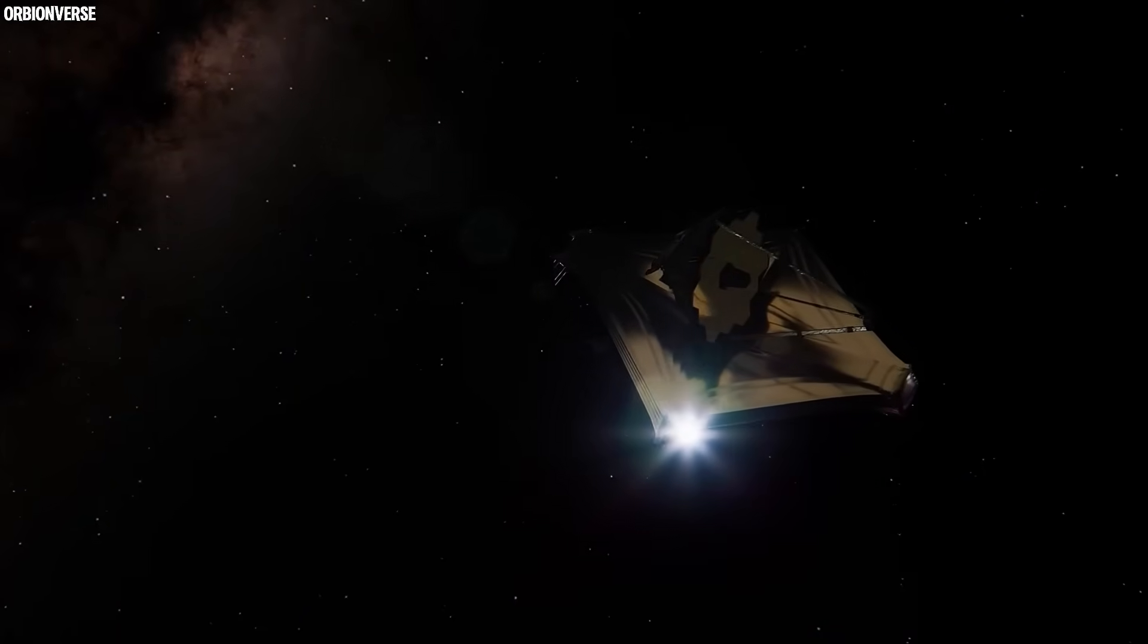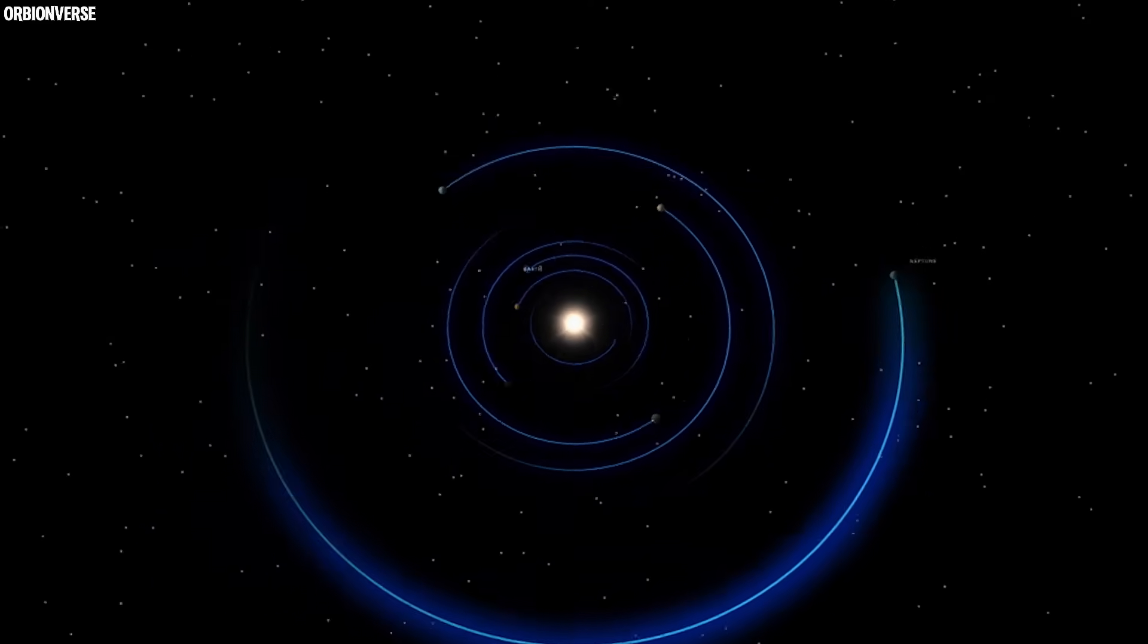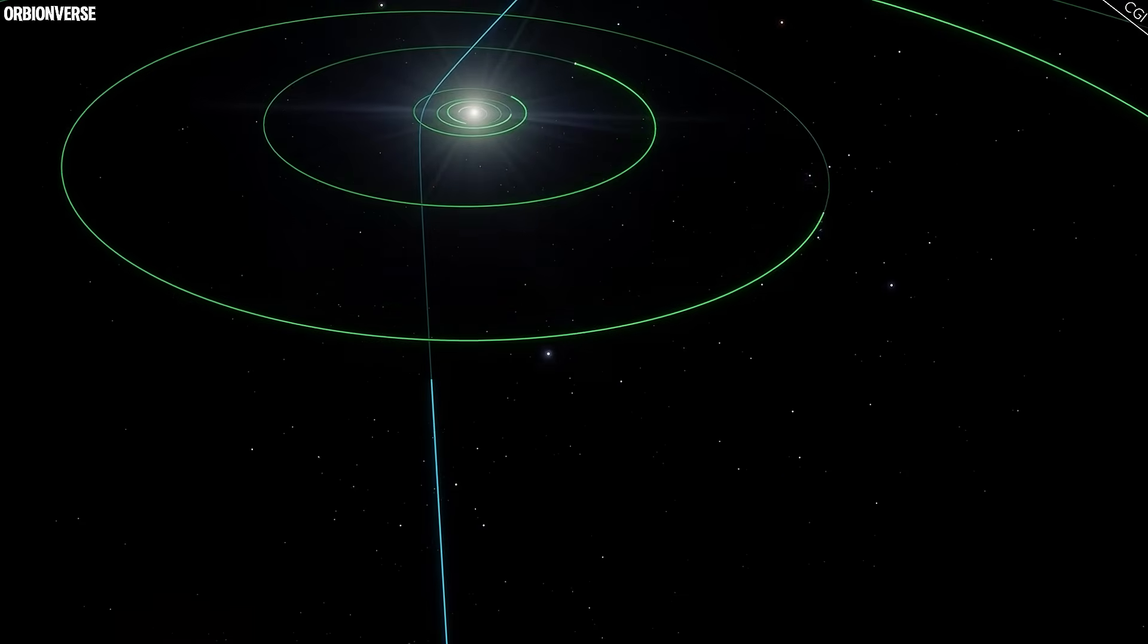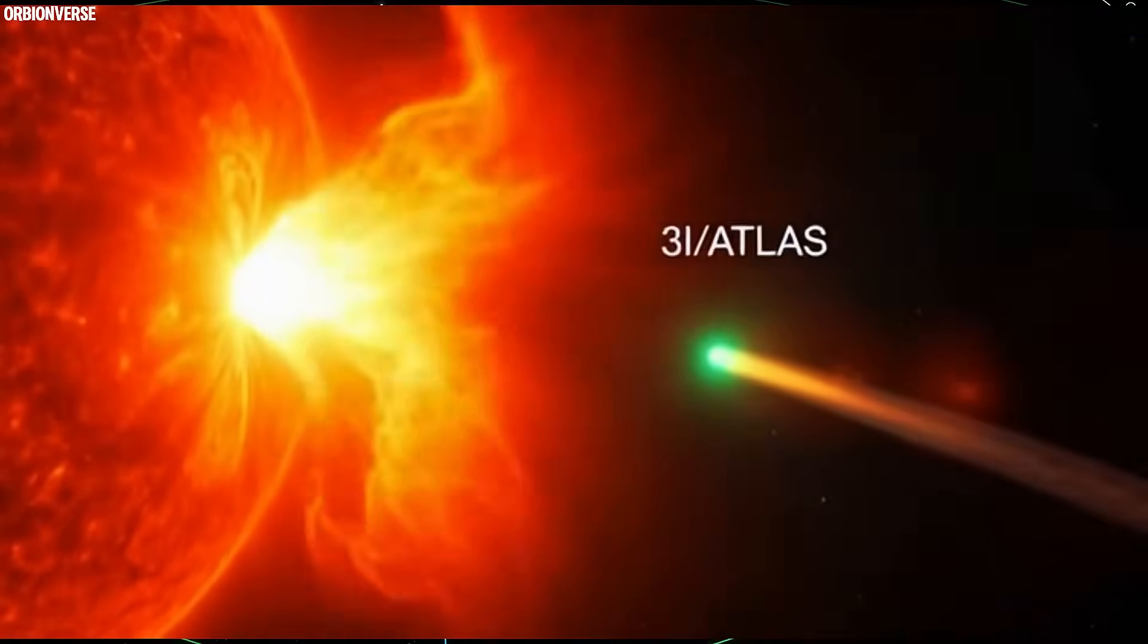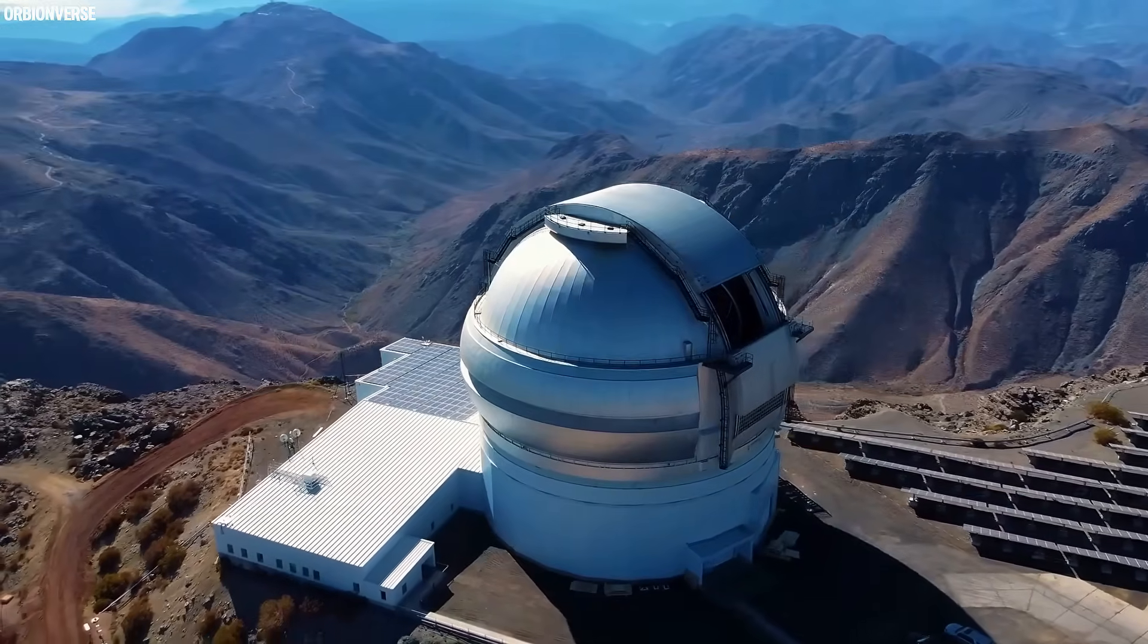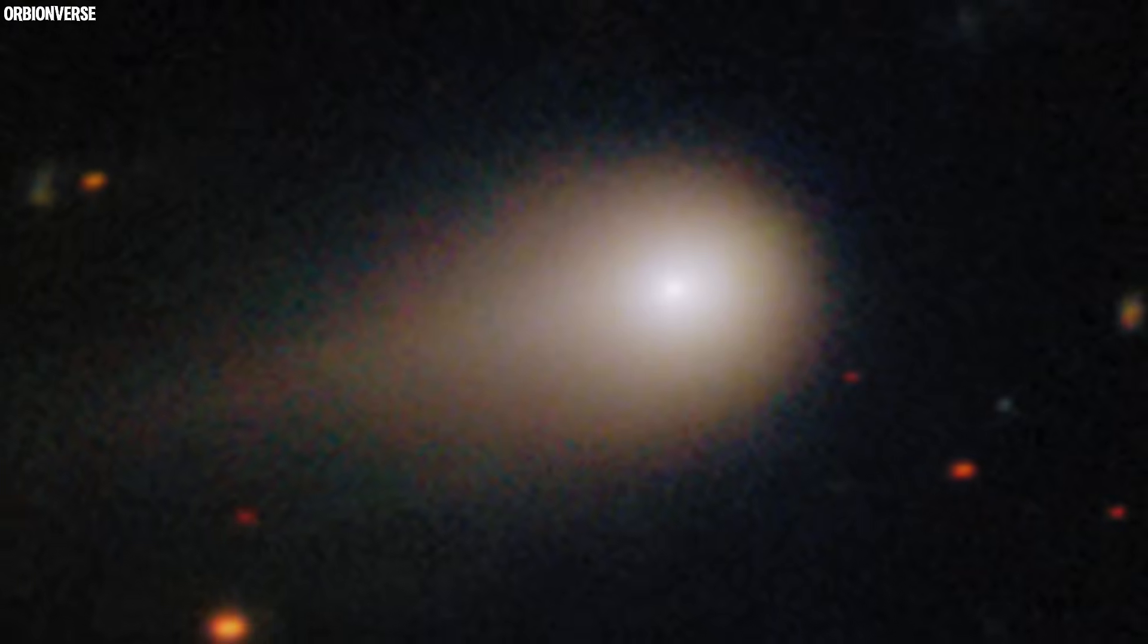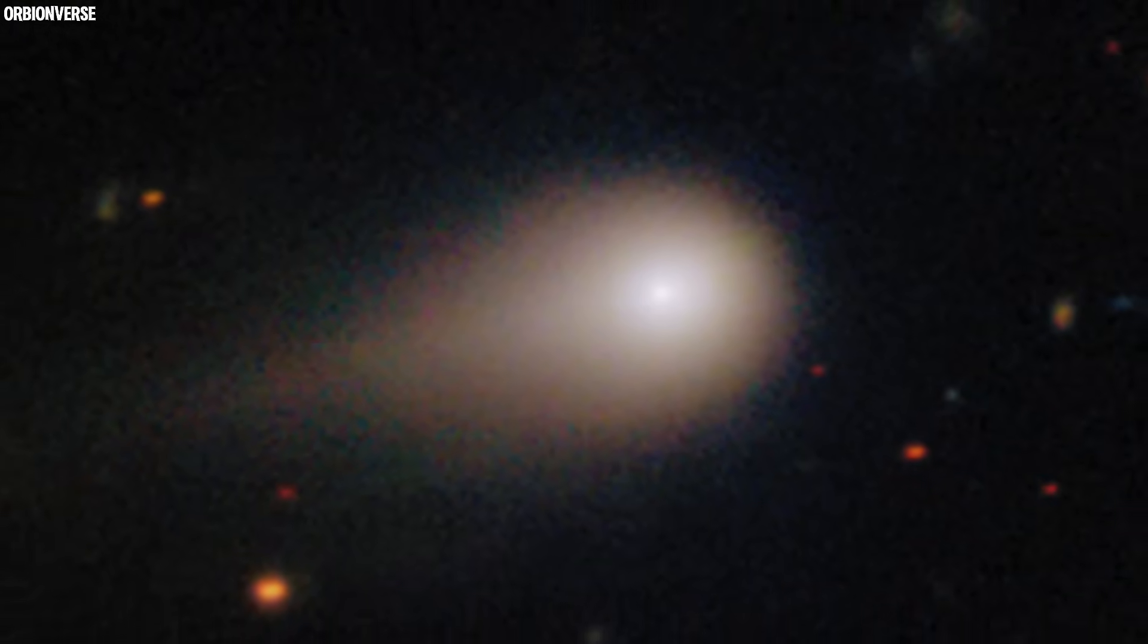As Webb tracked it longer, the pattern rotated, shifted, and then shockingly realigned itself toward the sun, as though acknowledging its observer. For a moment, every instrument flatlined. Then the signal resumed, brighter than before.